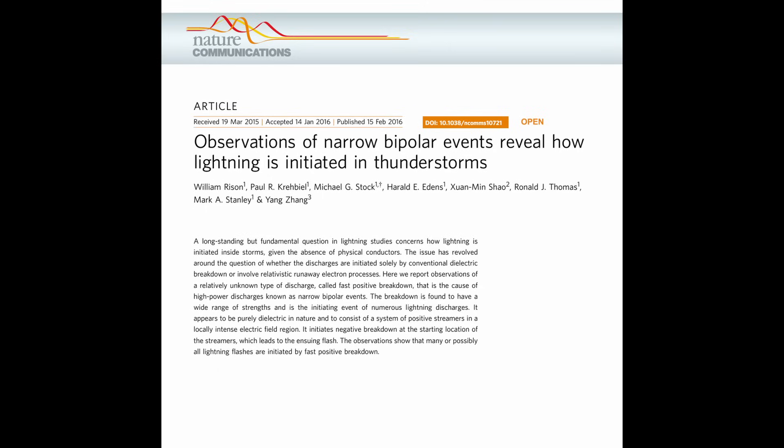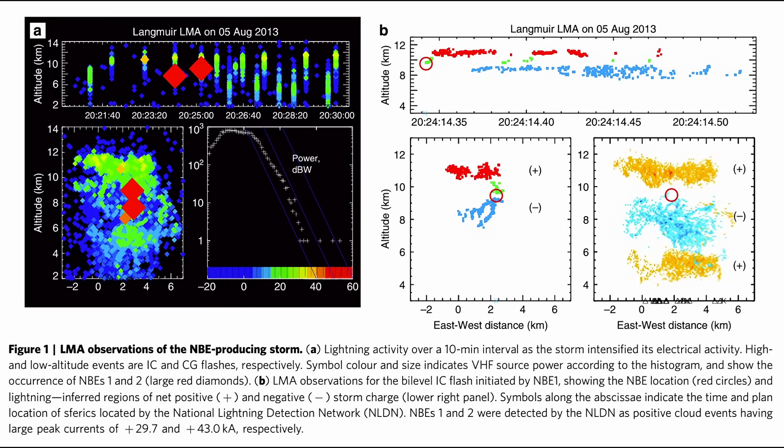In 2016, Rice and his colleagues investigated the initial breakdown of numerous lightning flashes using a lightning map array and a lightning interferometer, and their findings indicated that all lightning flashes were triggered by fast positive breakdown, thereby excluding the possibility of initiation by relativistic runaway electron avalanches.